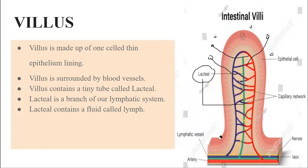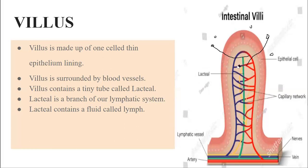Arteries and veins are part of our circulatory system, carrying blood. Nerves carry impulses from the brain. The lymphatic system consists of a white-colored fluid called lymph — L-Y-M-P-H. Lymph is essentially blood plasma containing white blood cells called lymphocytes, which produce antibodies and support our immune system to fight against infections.